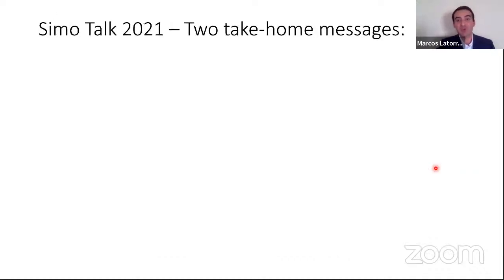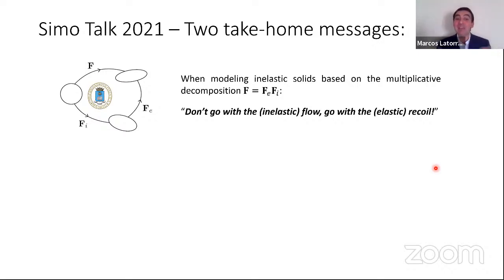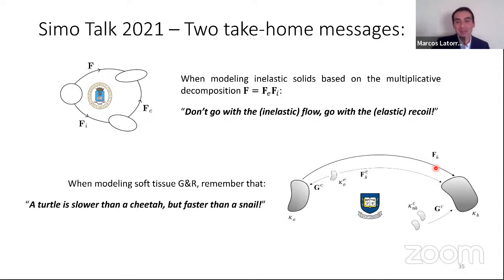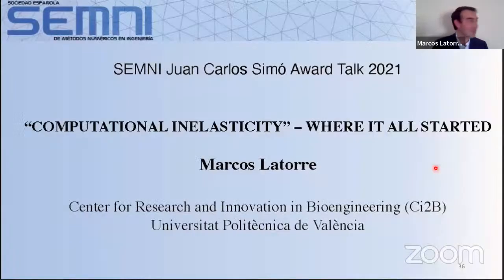These are the references for this part. Let's finish with just two take-home messages. Regarding modeling inelastic solids based on the multiplicative decomposition, I suggest you don't go with the inelastic flow — just go with the elastic recoil. And when modeling soft tissue G&R, remember that a turtle is slower than a cheetah. But of course, it is faster than a snail. With this, I finish.